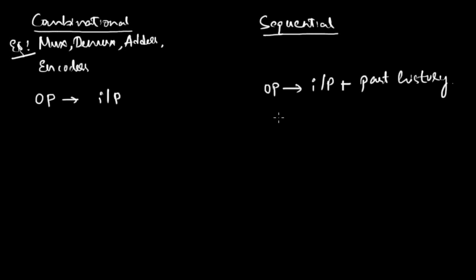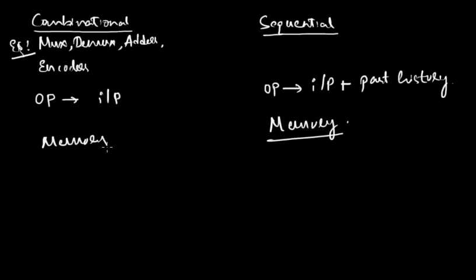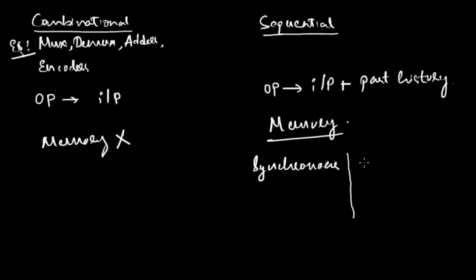Since the past history of inputs must be stored somewhere, we need memory in case of sequential circuits. In contrast, combinational circuits do not need to store any past data, so there is no need for memory with respect to combinational circuits.